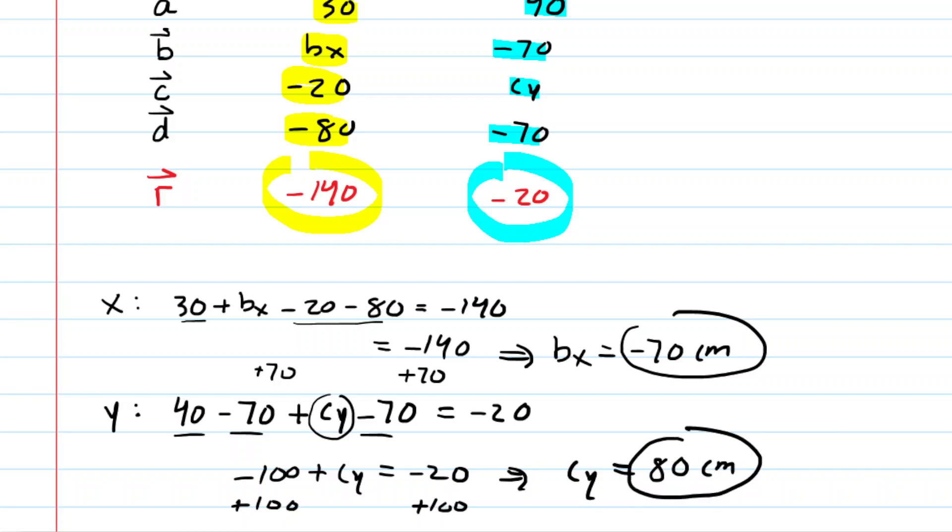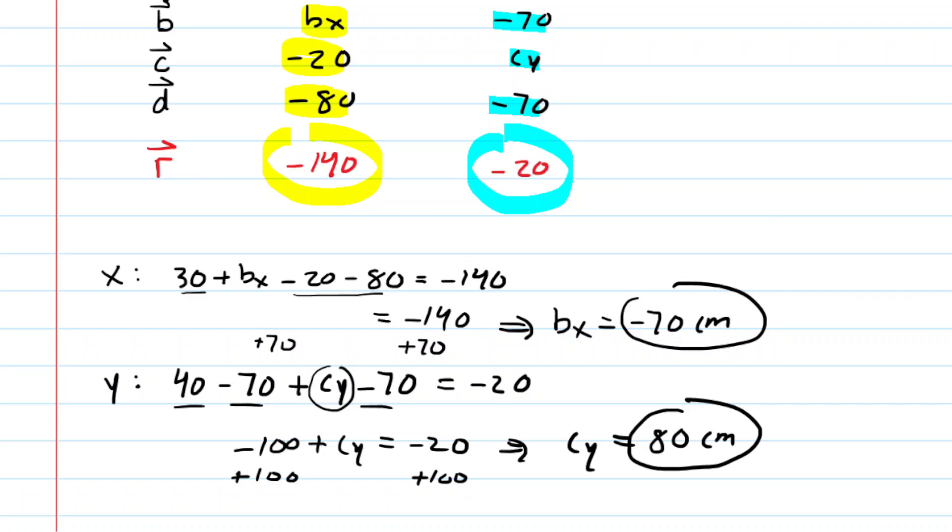We can move on and solve for parts C and D by considering the X and Y components of the total displacement. Going back and looking at the chart, we see that the X component was negative 140, the Y component was negative 20. We're going to draw those to solve for parts C and D.